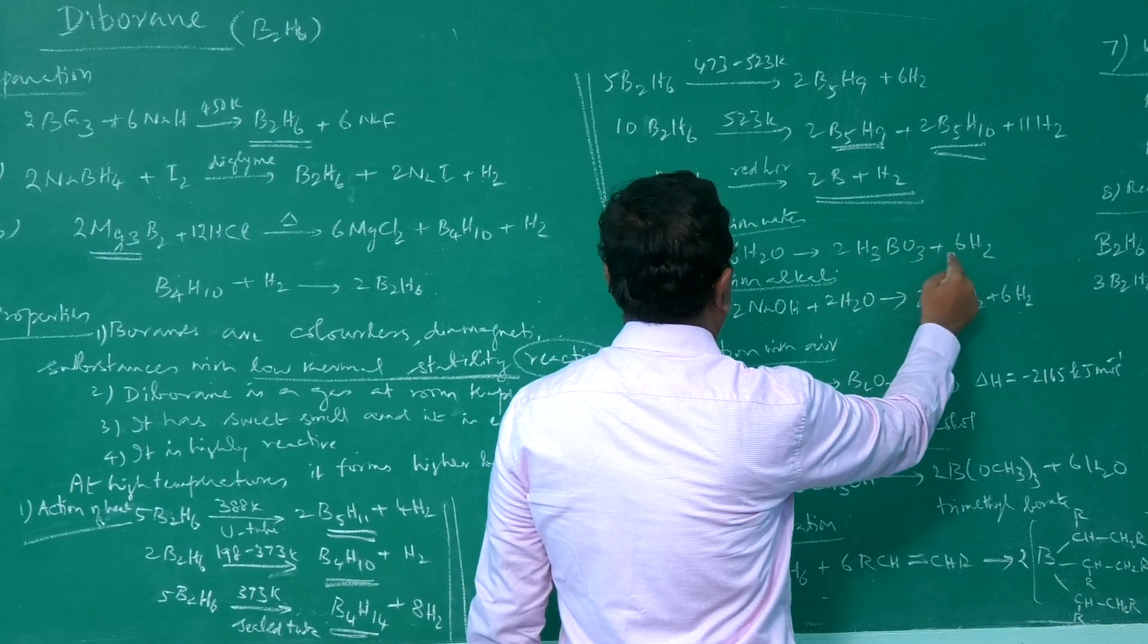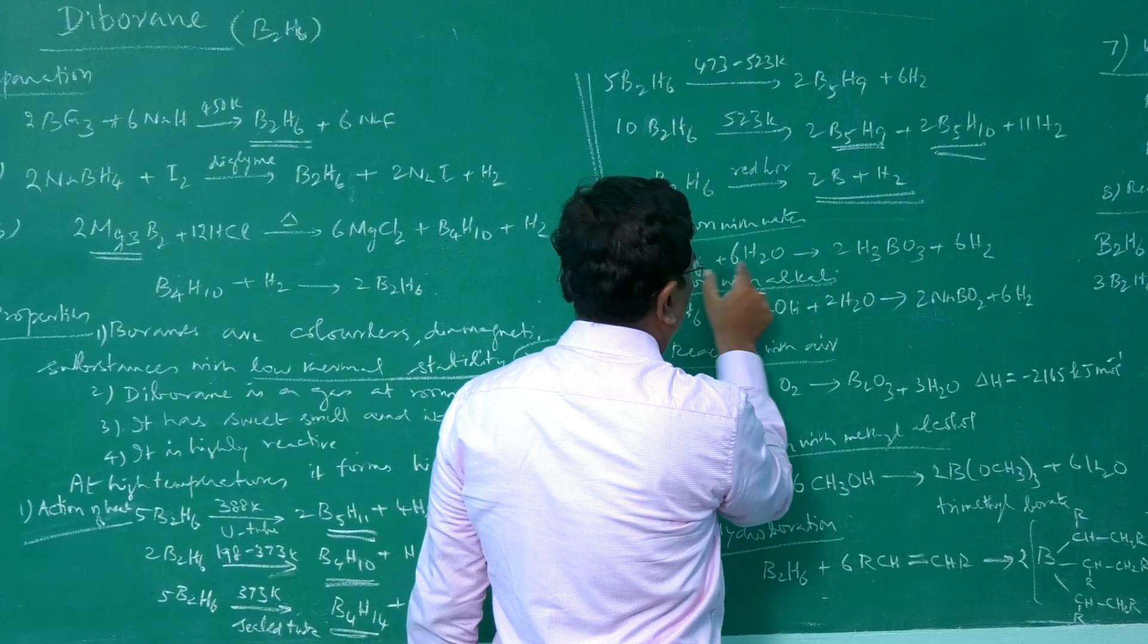Diborane with water forms boric acid. Boric acid is H3BO3. Two borane, therefore two H3BO3. We have six hydrogen atoms, six hydrogen atoms, therefore 6H2O. Out of 6H2, six hydrogen atoms here, remaining six plus six, 12, therefore 6H2.